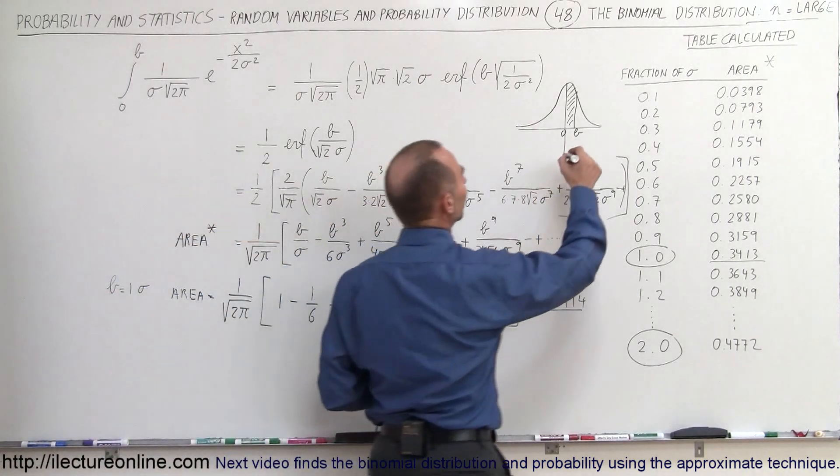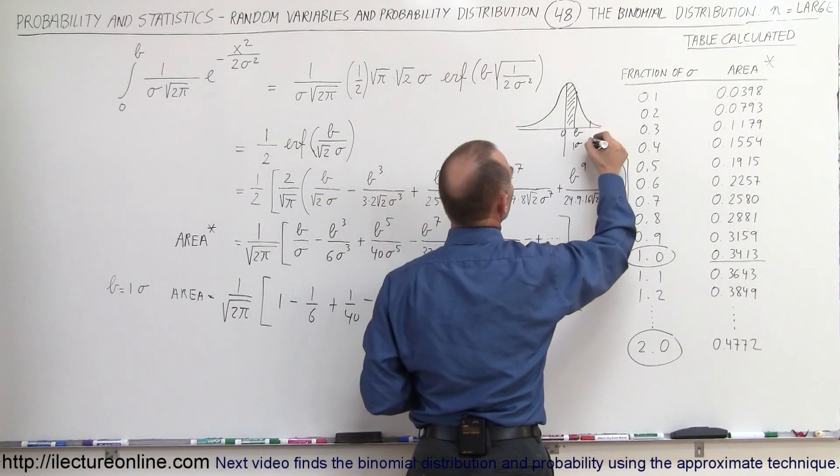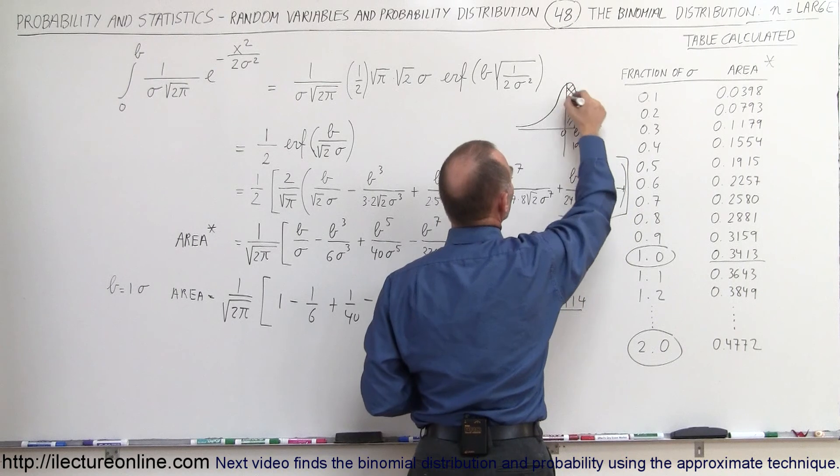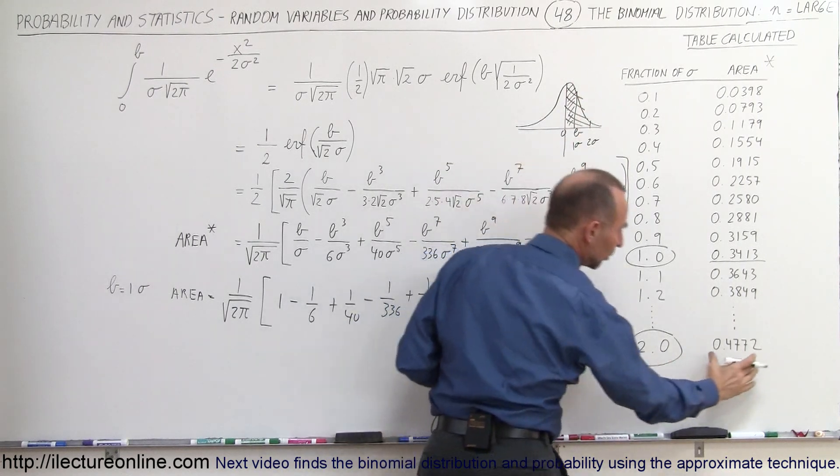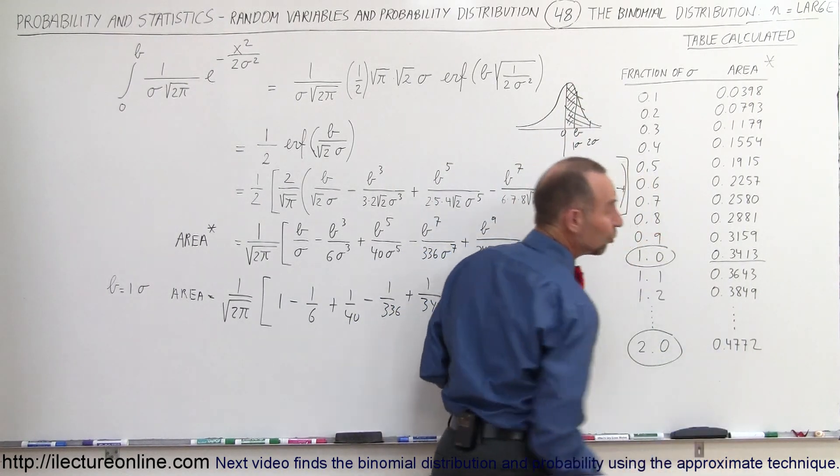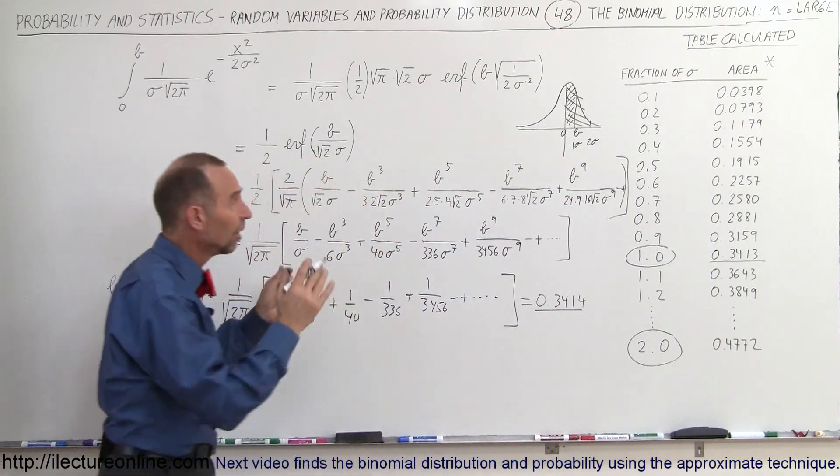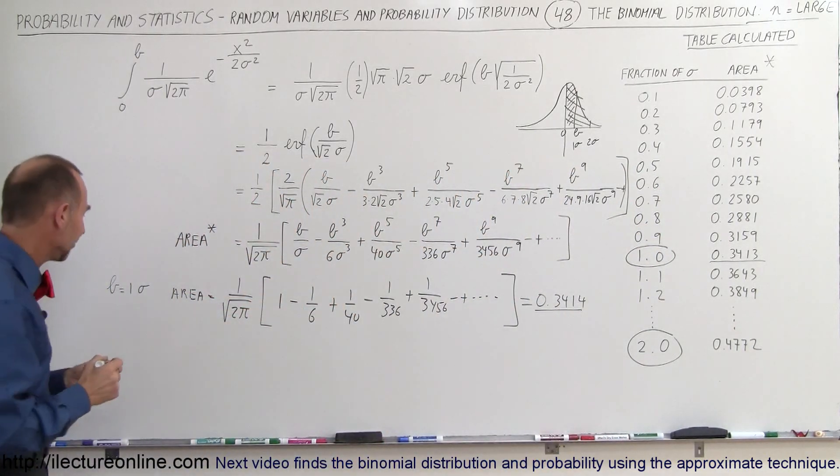So, if B is equal to one sigma, now we're going to go to B equals to two sigma. So, now we need to find this area right here, and according to the table, it should be equal to 0.4772, or 47.72 percent of the total area underneath that graph.